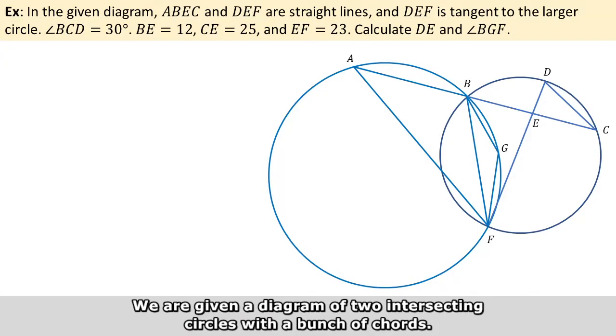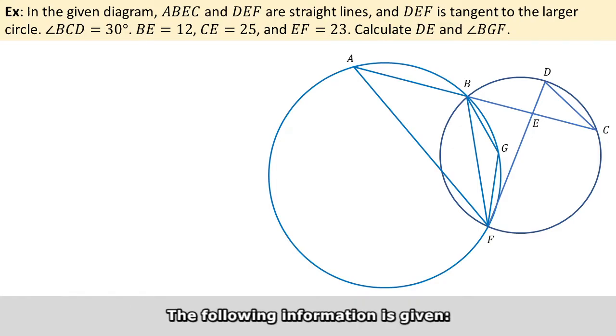We are given a diagram of two intersecting circles with a bunch of chords. The following information is given: both A, B, E, C and D, E, F are straight lines.